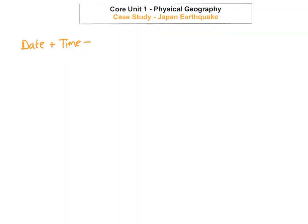So the first thing we're going to look at for the case study for the Japan earthquake is the date and the time. It happened on the 11th of March 2011 and the time was 14:46, so it happened at a quarter to three Japanese time.